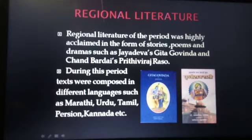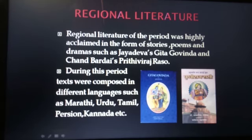Regional Literature: Regional literature of the period was highly acclaimed in the form of stories, poems and dramas such as Jayadeva's Gita Govinda and Chand Bardai's Prithviraj Raso. During this period, texts were composed in different languages such as Marathi, Urdu, Tamil, Persian, Kannada, etc.